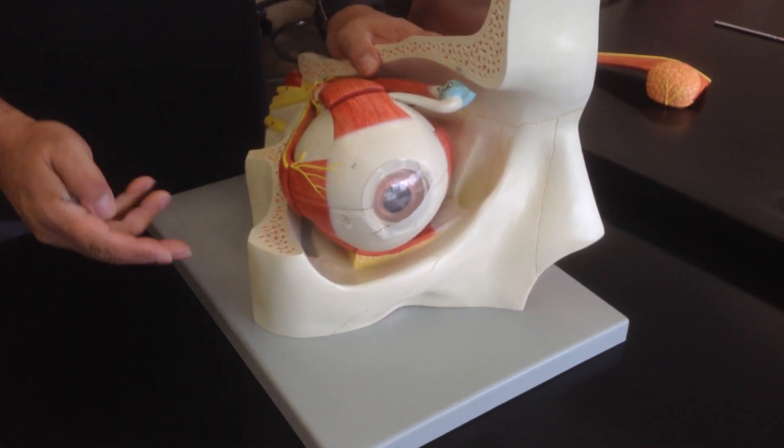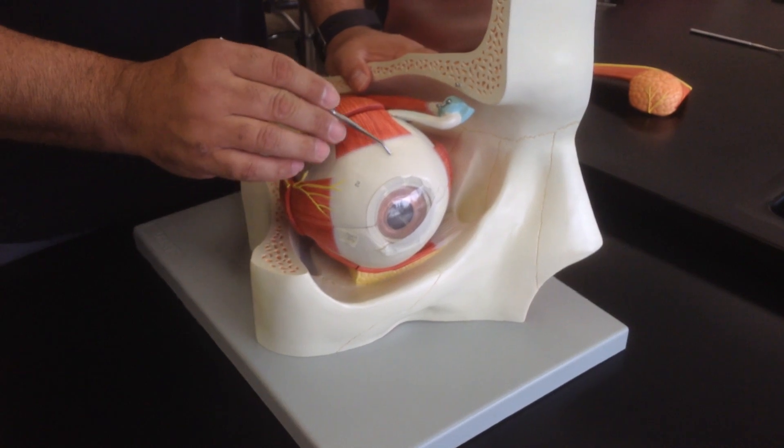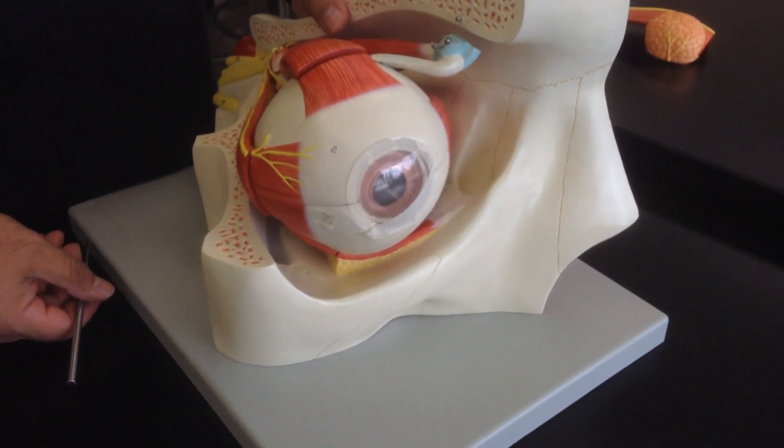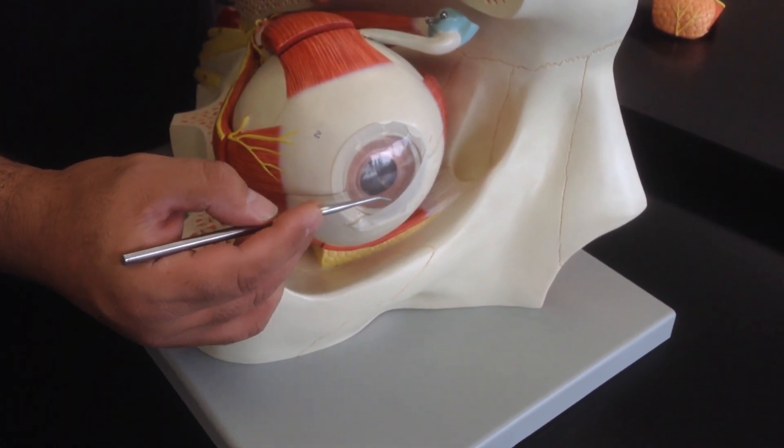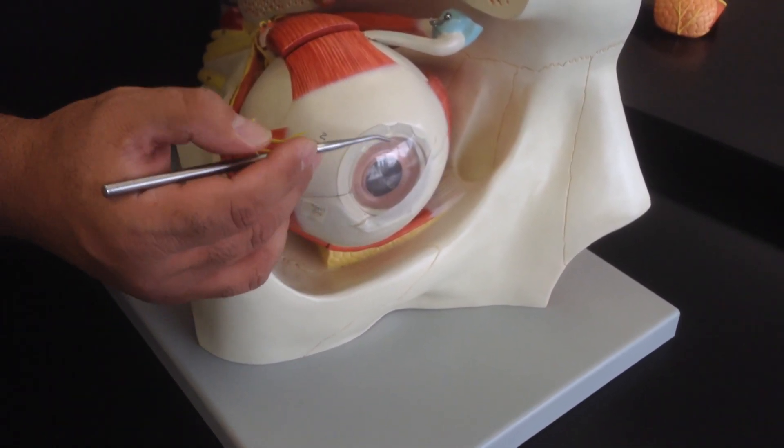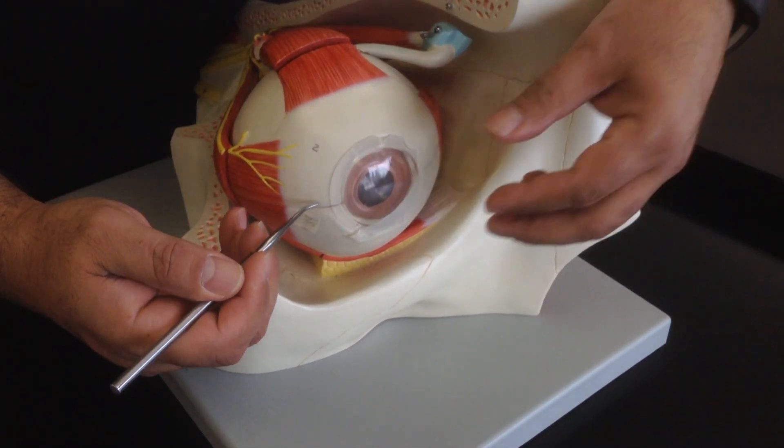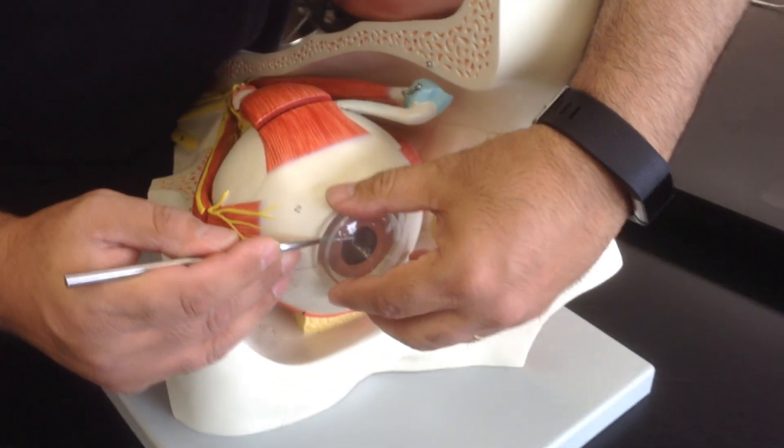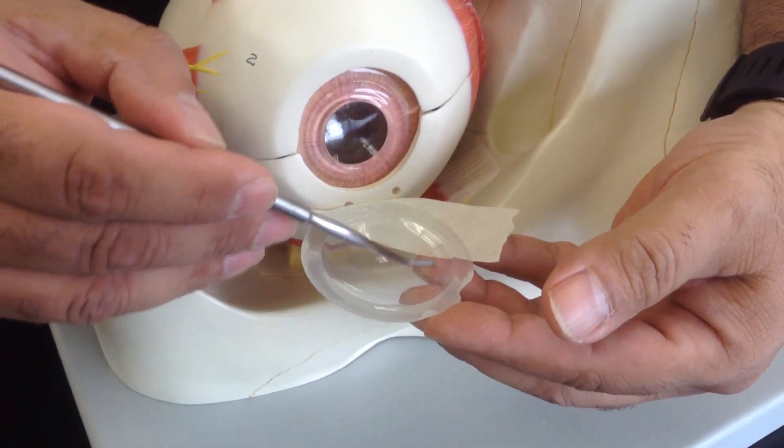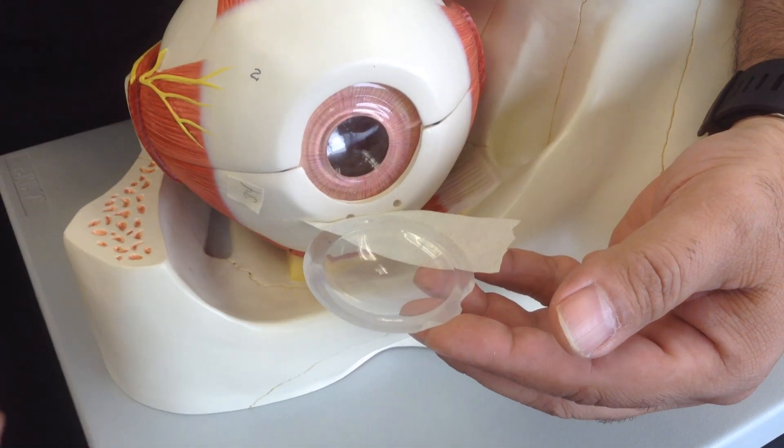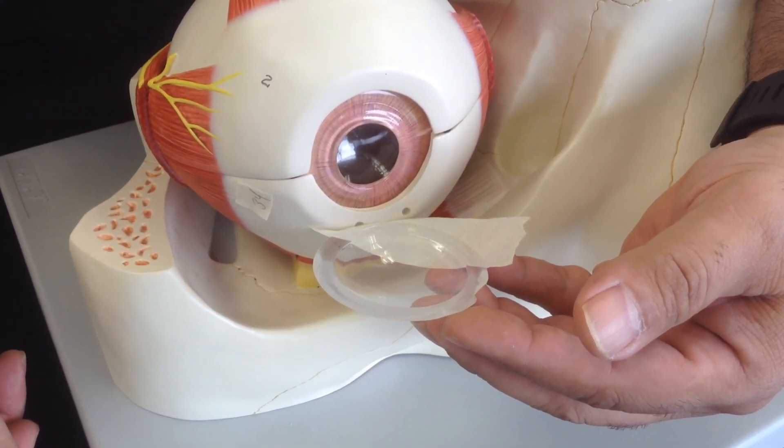The other structures associated with the globe of the eye itself: number one, this white part is known as the sclera, or the white part of the eye that is visible. As we come to the center, you can see the cornea that has a curvature on it. If I move the cornea a little bit to the side, underneath it you can see there is a small opening. This is known as the anterior chamber of the anterior segment of the eye.